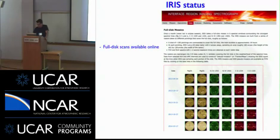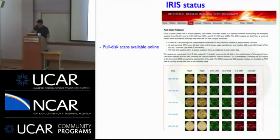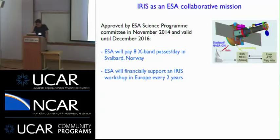Scott McIntosh has been working very hard in the last few months on full-disc spectral heliograms that we've been taking on a regular basis since launch but hadn't really processed properly until very recently. Scott put together a pipeline with some help from the Lockheed folks and Norwegian folks, and they're now available online from our website. IRIS is now an ESA collaborative mission since late last year, thanks in part to the efforts of our Norwegian colleagues.